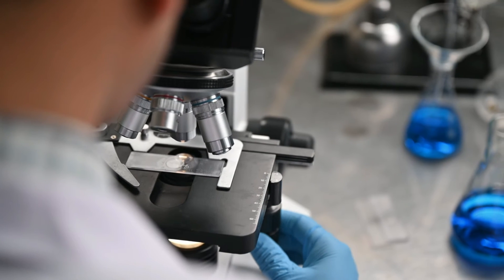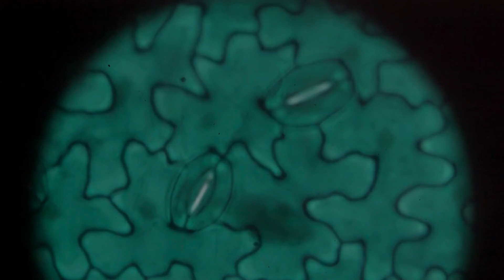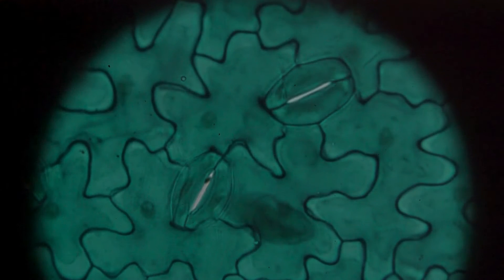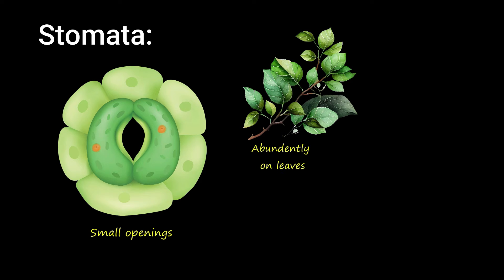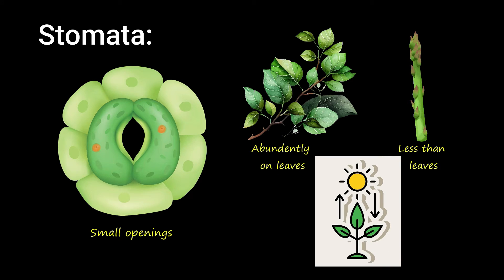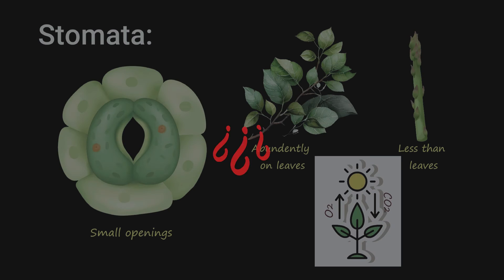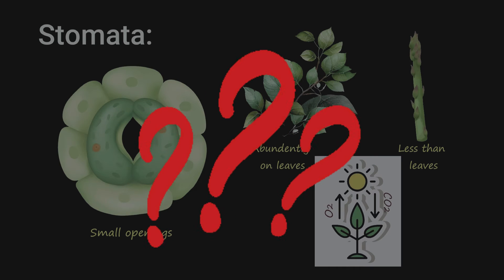This is where the magic happens. The leaf, with its intricate network of veins and tiny pores called stomata, serves as the primary site for gaseous exchange in most plants. Stomata are small openings found on the surface of leaves and stems. They regulate the exchange of gases, allowing carbon dioxide to enter the plant for photosynthesis, while releasing oxygen and water vapor as byproducts. But how does this process work exactly? Let's break it down.